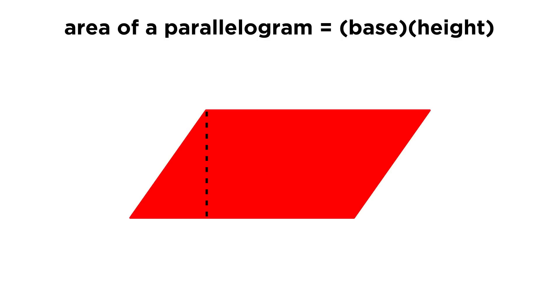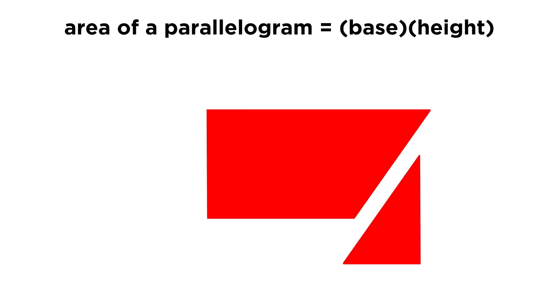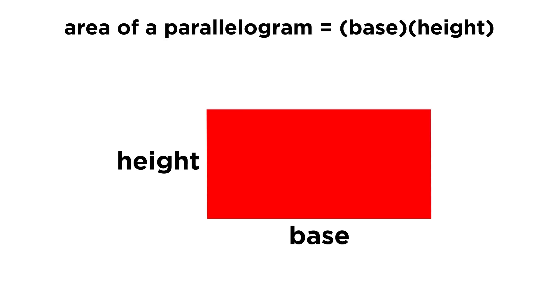It becomes very clear why this works if we draw the height right here, chop off this triangular segment, and move it to the other side to make a perfect rectangle. Now we can see that base times height on the parallelogram is the same as length times width on the corresponding rectangle.